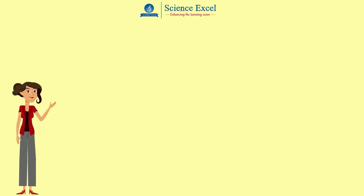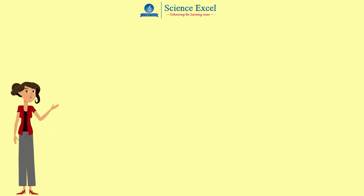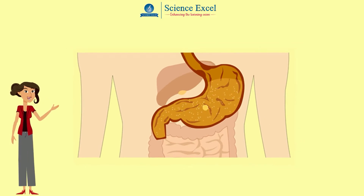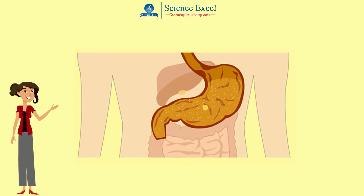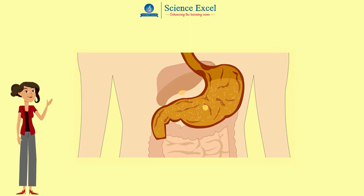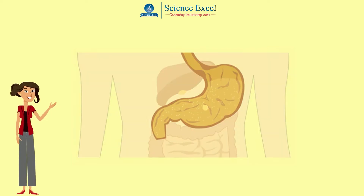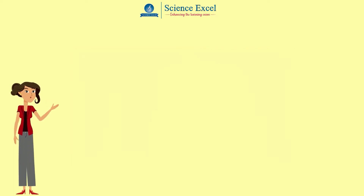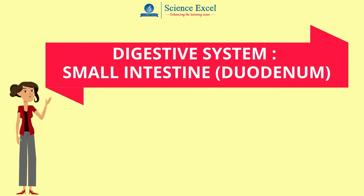In our previous tutorial we learned how the stomach helps in the process of digestion and makes chyme. Now let us see what happens to this chyme as it enters into the duodenum part of the small intestine.